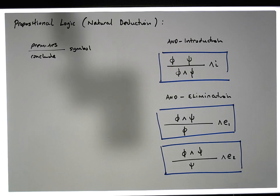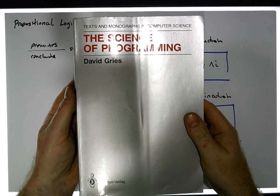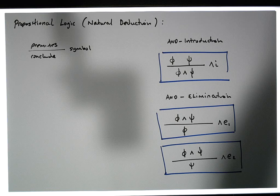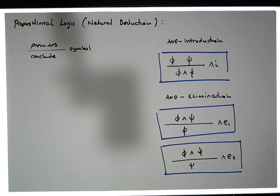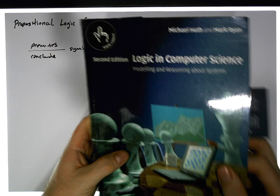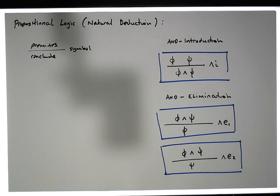Some of the examples I'm going to use are taken from two important textbooks. The first is 'The Science of Programming' by David Gries, which I'd highly recommend — it's a really interesting read. The other is 'Logic and Computer Science: Modelling and Reasoning about Systems' by Huth and Ryan. Some of the examples I'll consider have been taken from those texts.